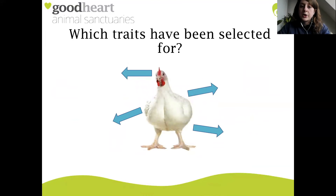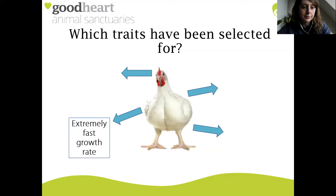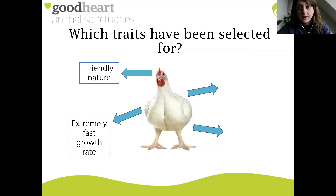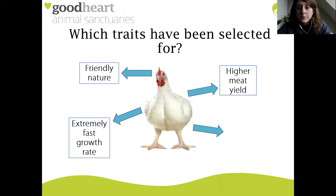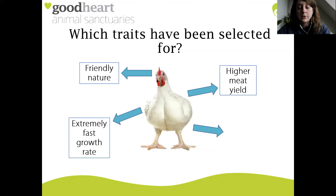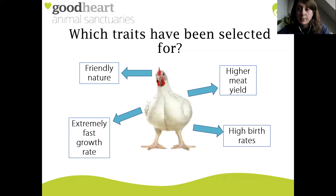Looking at our broiler chicken, which is very different to its ancestor: an extremely fast growth rate - we'll look at this in more detail shortly. Again a friendly nature, with talons not as pronounced as in the wild species. An incredibly high yield of meat - you can see the very large breasts and very large legs, all designed for human consumption. And again high birth rates.